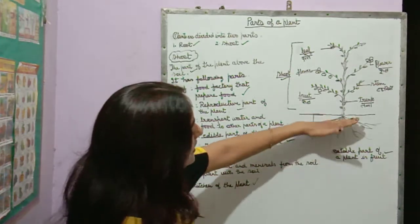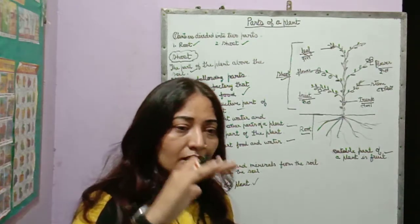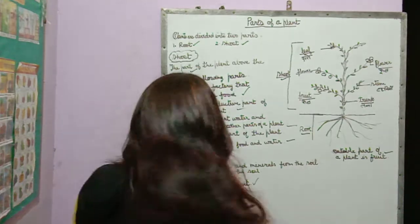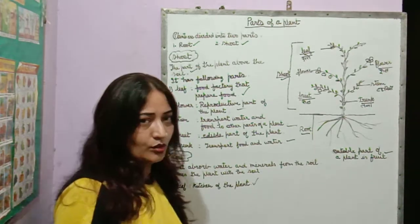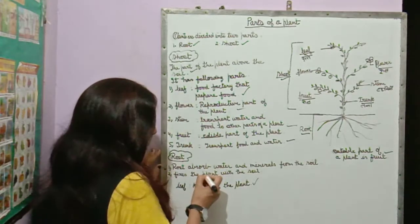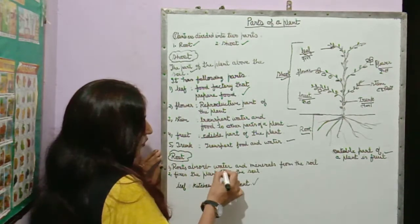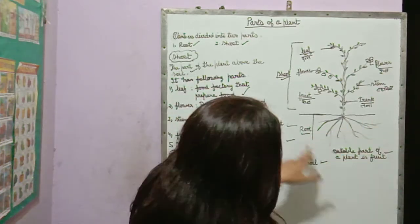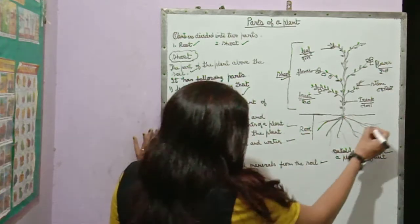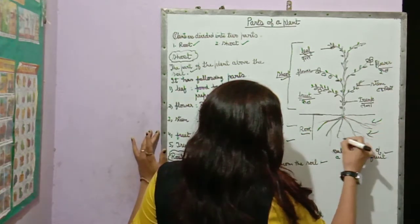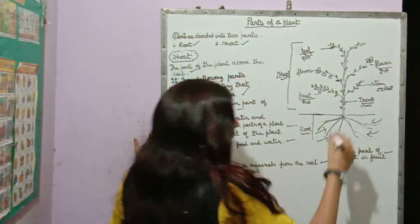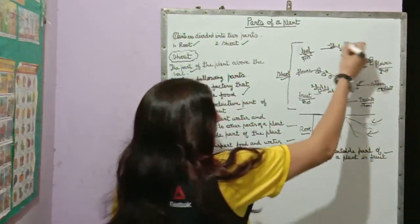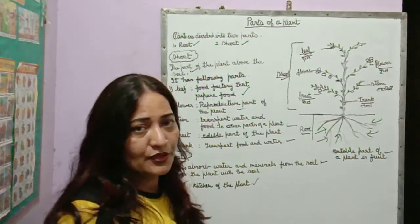The part which is under the ground — the part which is under the ground and under the earth's surface — that is the root. Roots have two functions. First: roots absorb water and minerals from the soil. Then those minerals and nutrients are transferred to different parts of the plant through the stem.